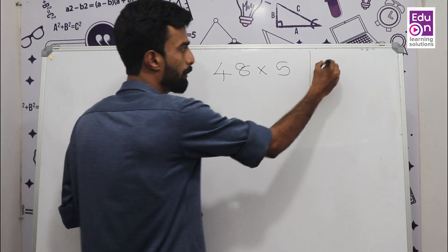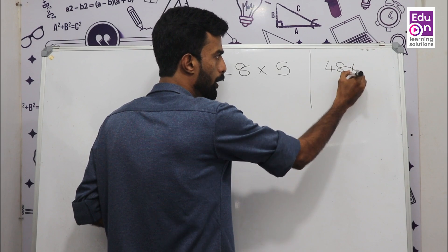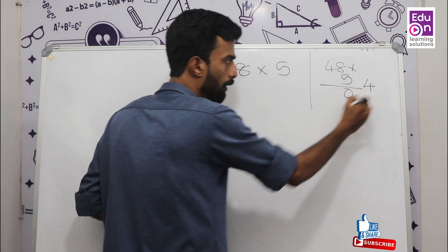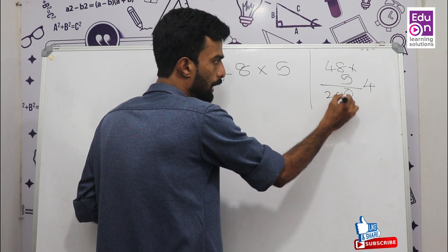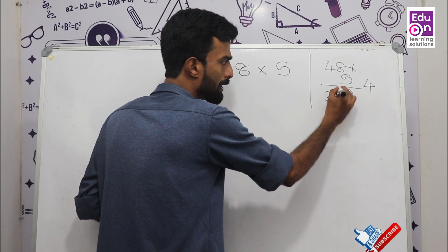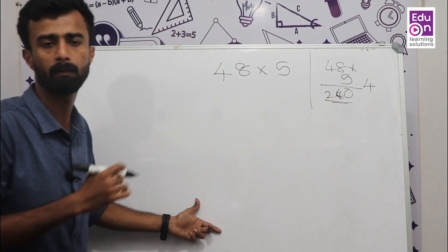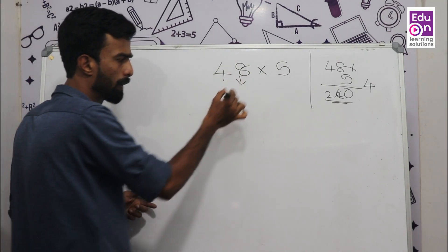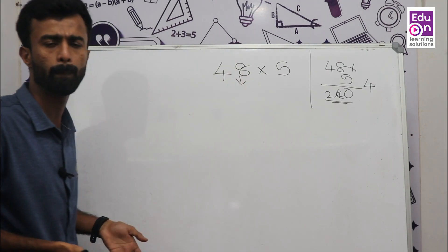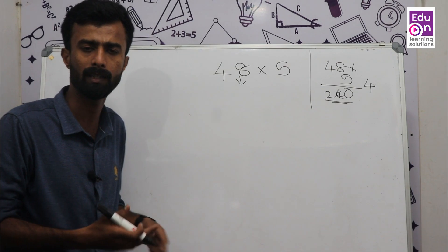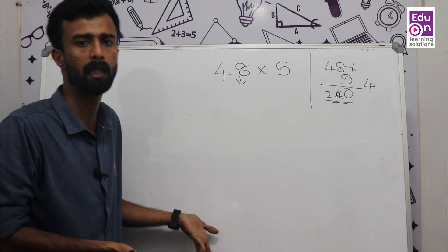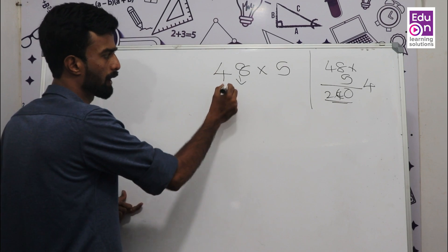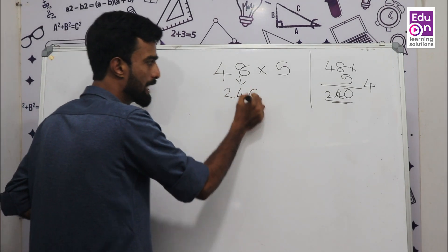The basic conventional method for 48 × 5: 8 × 5 = 40, carry 4; 4 × 5 = 20, plus 4 = 240. The shortcut method: take half of 48, which is 24, then multiply by 10 to get 240. Simple!